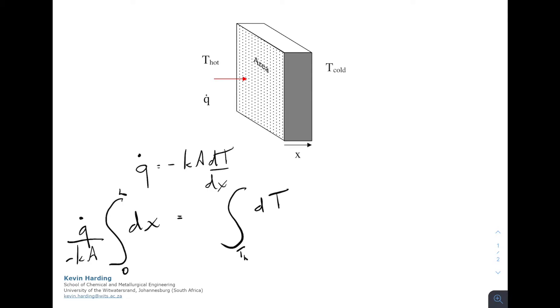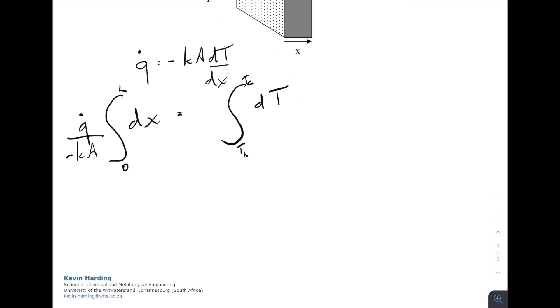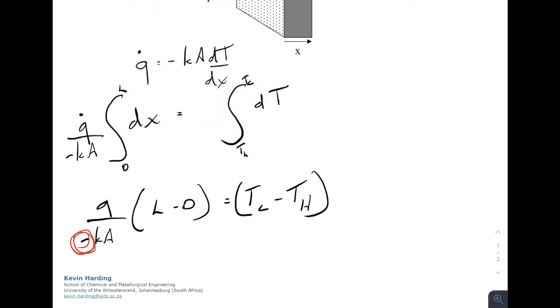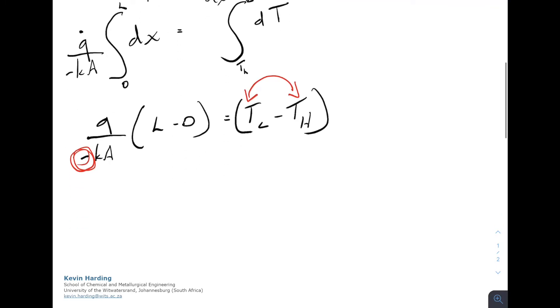Simplifying and integrating, we have Q over minus Ka multiplied by L minus 0 equals temperature cold minus temperature hot. We'll use that negative to have T hot minus T cold to get a positive value.